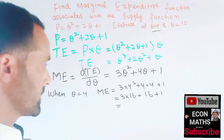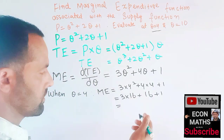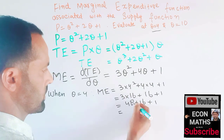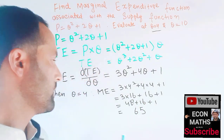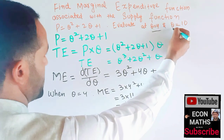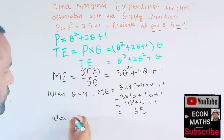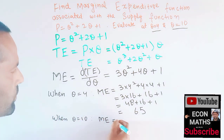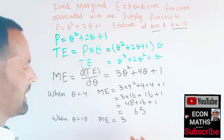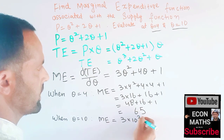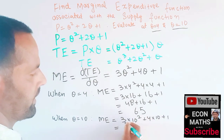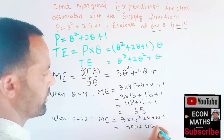So 3 × 16 = 48, plus 16, plus 1, which comes out to 65. So the marginal expenditure when output is 4 is 65. When q = 10, we plug in: ME = 3(10²) + 4(10) + 1 = 3(100) + 40 + 1 = 300 + 40 + 1 = 341.